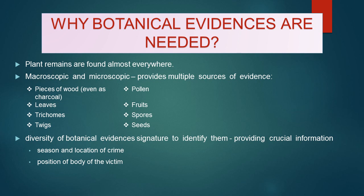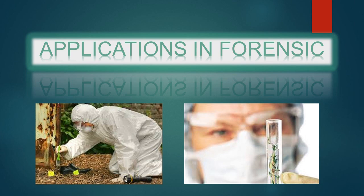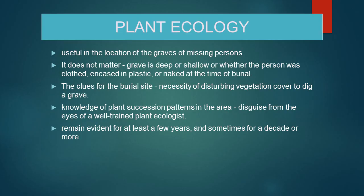Botanical evidence provides crucial information such as the season and location of a crime, and the position of the body of the victim — for example, whether it has been moved after murder or buried, and if so, for how long. Regarding plant ecology, it has been useful in the location of graves of missing persons. It does not matter whether the grave is deep or shallow, or whether the person was clothed, encased in plastic, or naked at the time of burial. The clues come from the necessity of disturbing vegetation to dig a grave, and knowledge of plant succession patterns is almost impossible to disguise from a well-trained plant ecologist. These signs remain evident for at least a few years, and sometimes a decade or more.